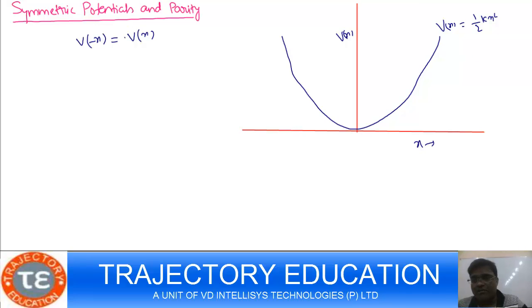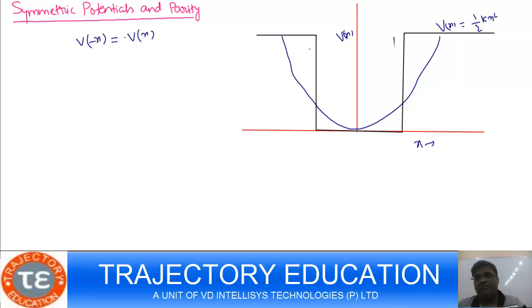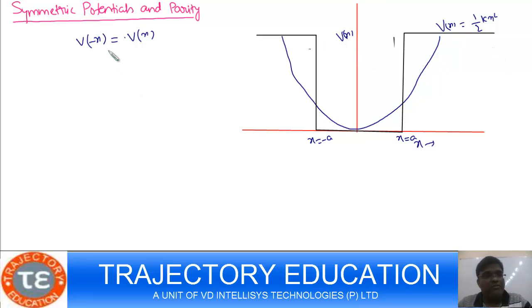Or the potential can be of another kind — a finite potential well, something like this. This is a finite potential well, where x equals a and x equals minus a. So this is also a symmetric potential.